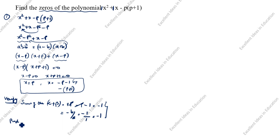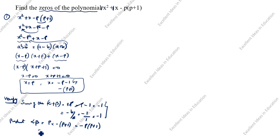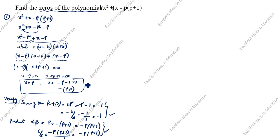Next, the product of the zeros: alpha × beta. Alpha = p, beta = -(p + 1). So alpha × beta = p × -(p + 1) = -p(p + 1). Using the formula, product of zeros = c/a. Here c = -p(p + 1), a = 1, so the answer is -p(p + 1). Both answers are the same, confirming the zeros of the polynomial are correct.